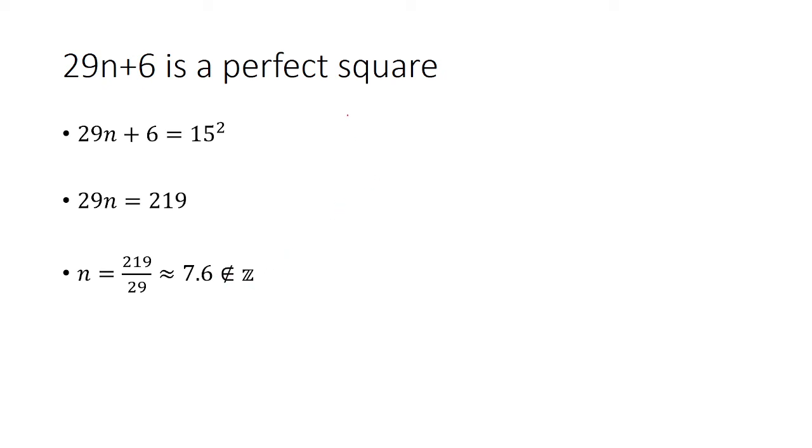We've proved that for n+1 and n-1, the result is not a perfect square. Therefore, there do not exist three consecutive integer values of n for which 29n+6 is a perfect square.